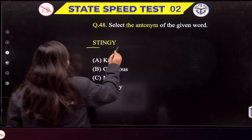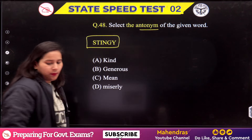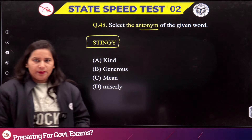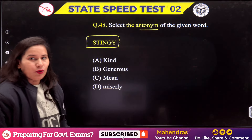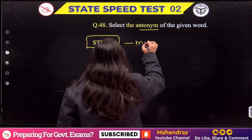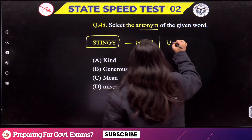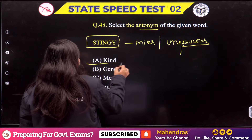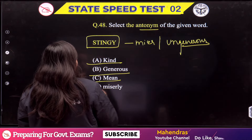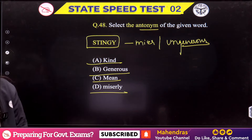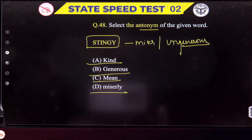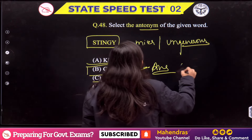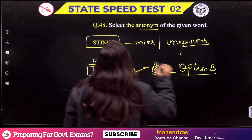Next: 'Stingy'. Stingy means a very miserly type of person — ungenerous. The options are: kind, generous, mean, or miserly. Since stingy means ungenerous, the antonym will be 'generous'. This will be our answer — Option B.